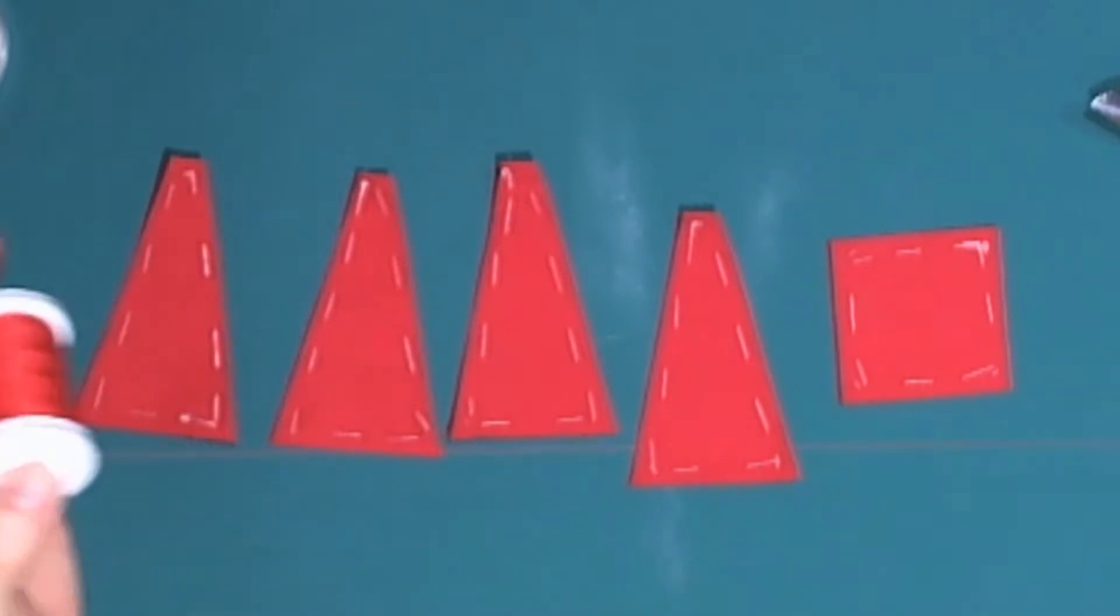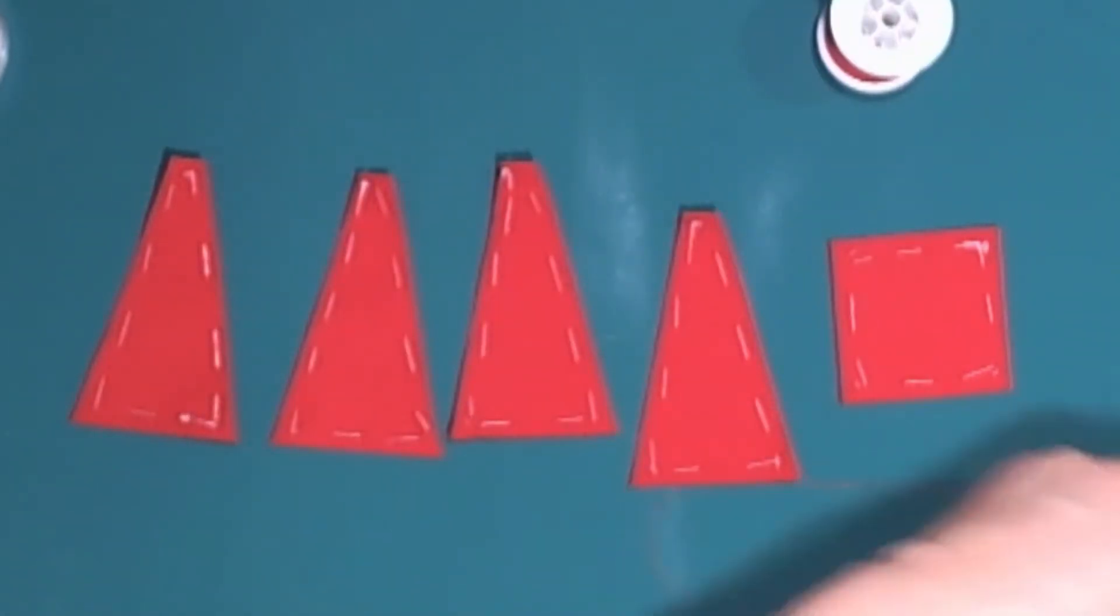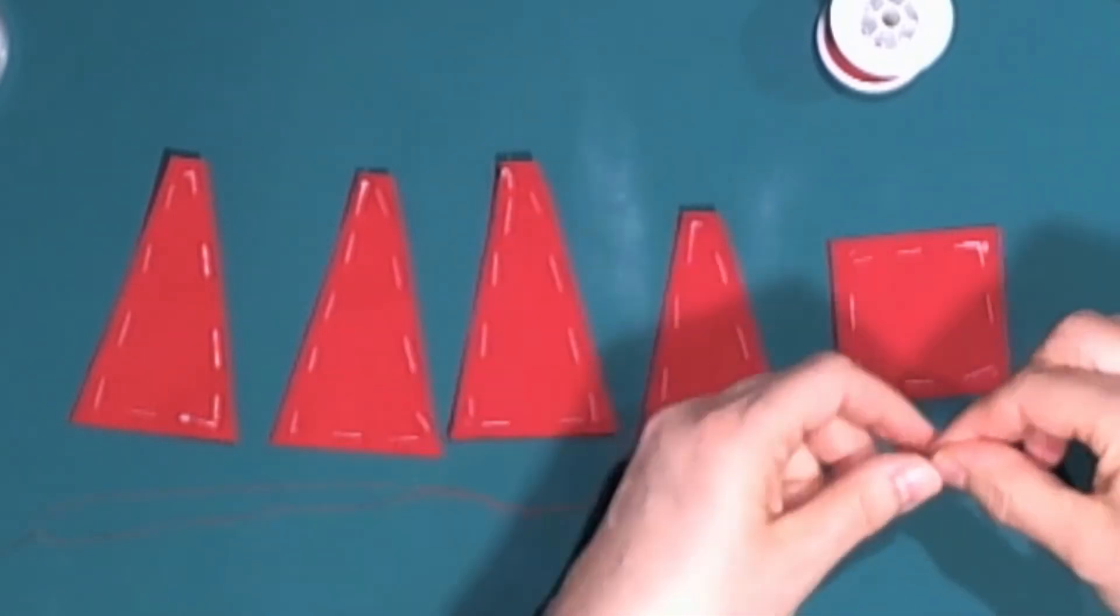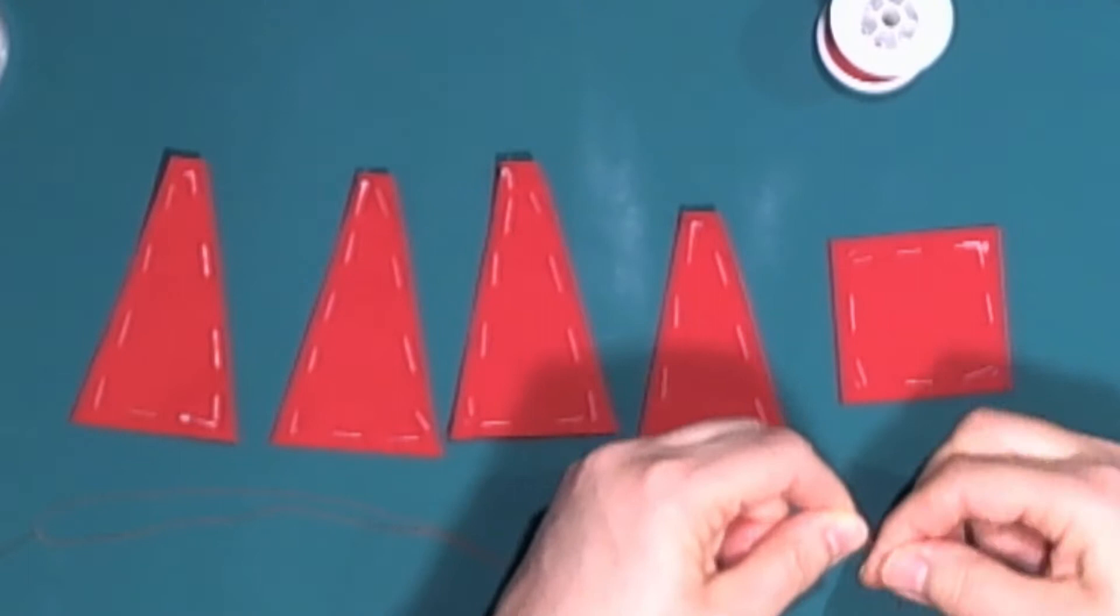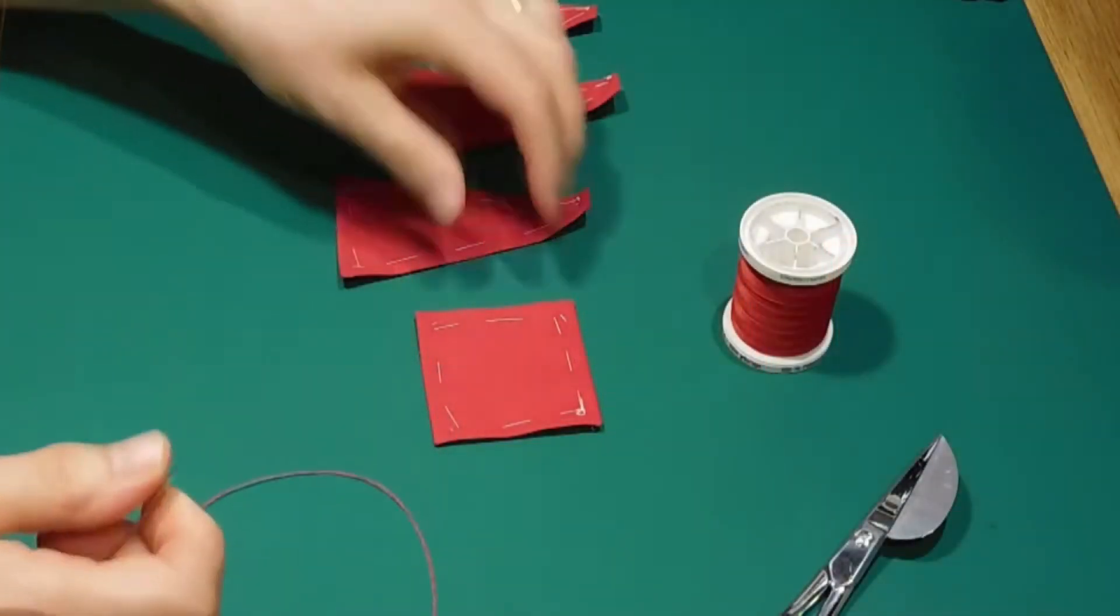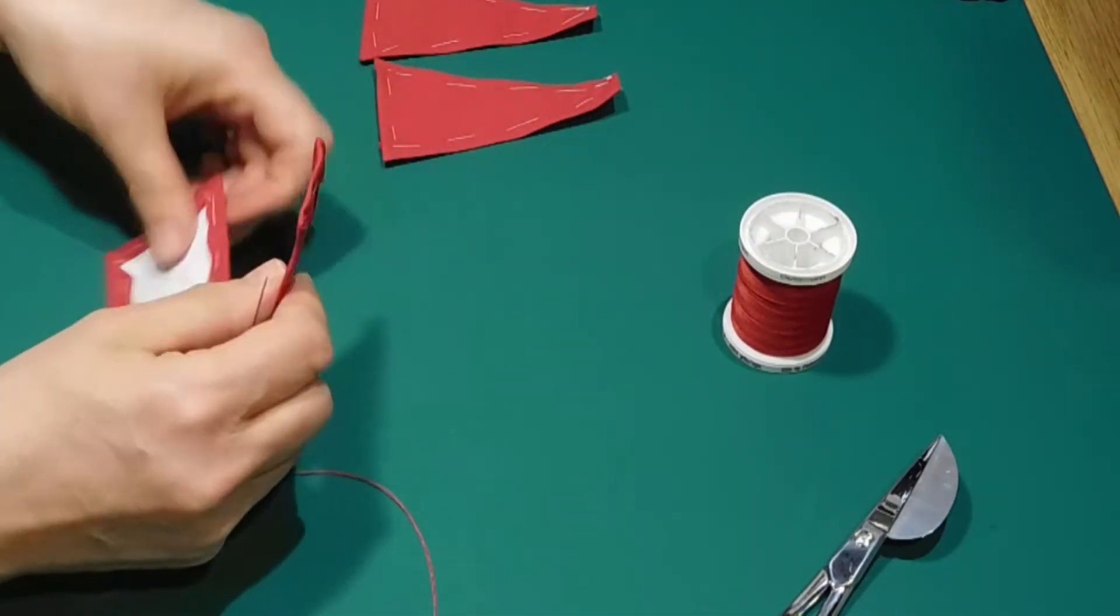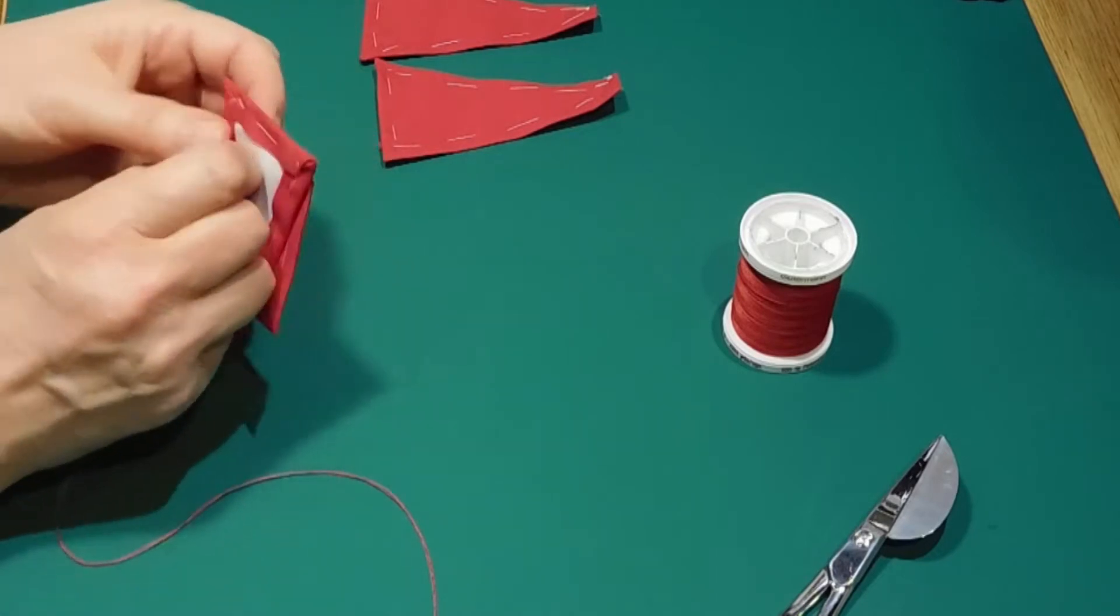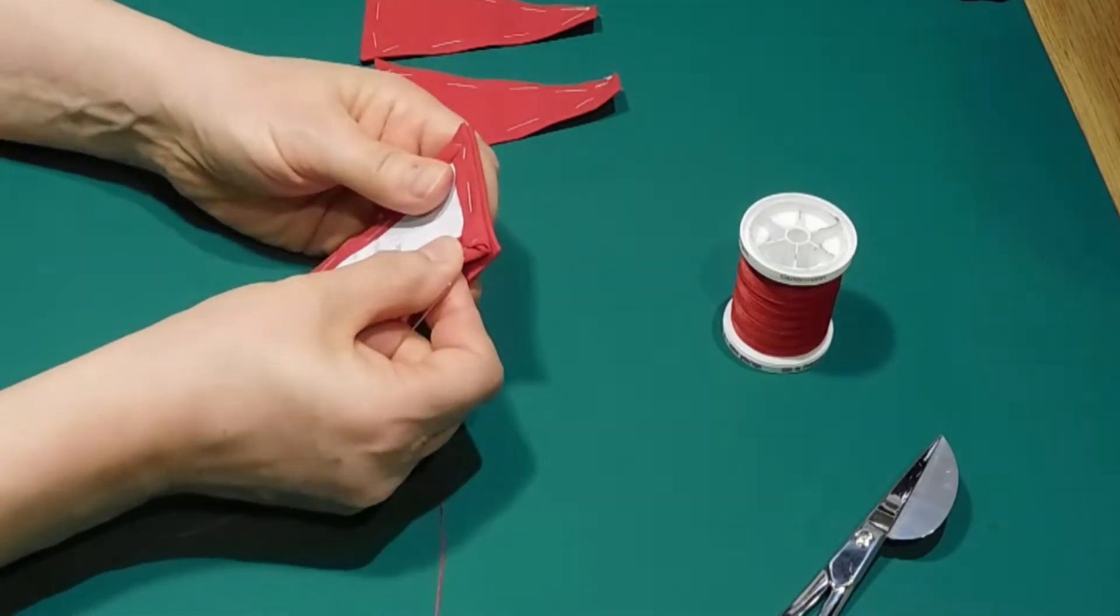Thread a needle with cotton which matches your material, doubling it and knotting it at the end. Then take the base template and with right sides together, match up the bottom of one of the triangles to one side of the base carefully.